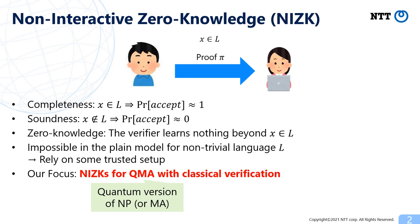In this work, we focus on NIZKs for QMA with classical verification. Here, QMA is the quantum version of NP or MA where witness and verification can be quantum. Even though we consider such quantum languages, we require that the verification can be done classically, which is a highly non-trivial property.